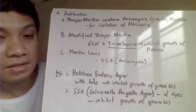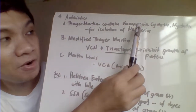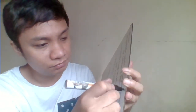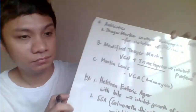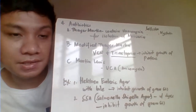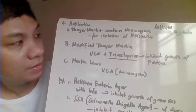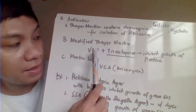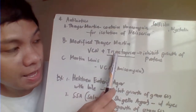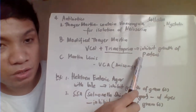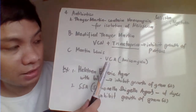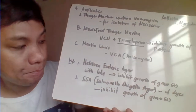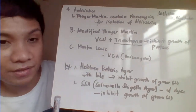Selective media can also contain antibiotics. Thayer-Martin medium contains VCN — vancomycin, colistin, and nystatin — and is used for isolation of Neisseria. Modified Thayer-Martin contains VCN plus trimethoprim, which inhibits the growth of Proteus. Martin-Lewis contains vancomycin, colistin, and anisomycin, also for Neisseria.